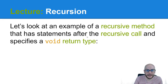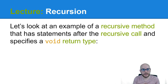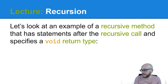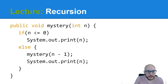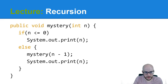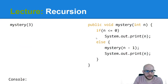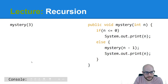Let's look at a recursive method that has statements after the recursive call — meaning it's not using tail recursion — and specifies a void return type. A method doesn't have to return something to be recursive; it can be void. And the recursive call doesn't have to be the last thing. Here's our mystery method — it is recursive because mystery is calling itself. Our base case: if n is less than or equal to zero, it just prints something and causes the call stack to stop.